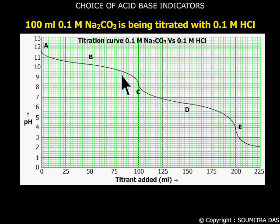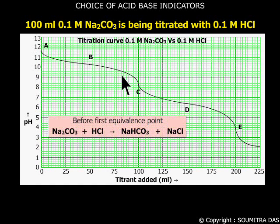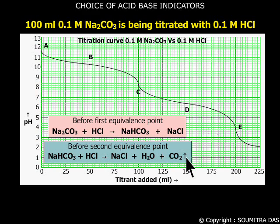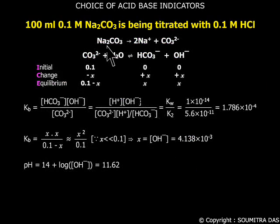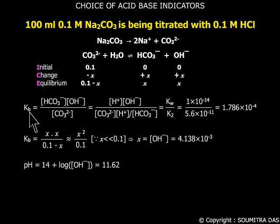Now if 100 ml of 0.1 molar Na₂CO₃ is titrated with 0.1 molar HCl, then the titration curve is as follows. During the first part of the titration — before the first equivalence point — this reaction occurs, and before the second equivalence point, this reaction occurs. Let us try to calculate the pH at different points during titration. At point A, Na₂CO₃ only is present and no HCl has been added. Na₂CO₃ ionizes like this, and the carbonate ion acts as a base, dissociating in water to give hydroxide ions.